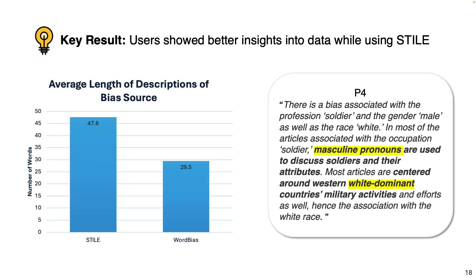To measure how well users understand the reason of the source of biases, we computed the word length of the descriptions of biases for each of the documented biases for both tools. Our results show that on average, Style users use 61% more words to describe the source or reason of a bias. You can see one example of such description by participant 4. The participant is showing better and high-level insight into the reason for the association between the word soldier to be male and white, which the participant found to be mostly news articles about military activities by white dominant countries.